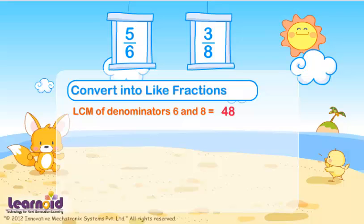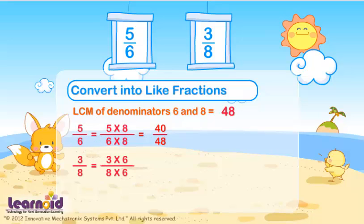To make both denominators equal, multiply numerator and denominator of 5 by 6 with 8. We get 40 by 48. Multiply 3 by 8 with 6. We get 18 by 48.